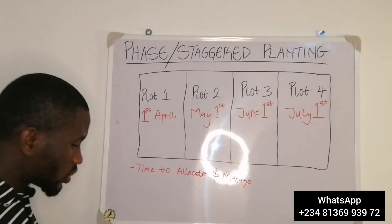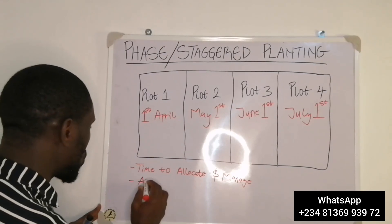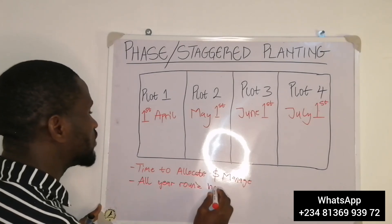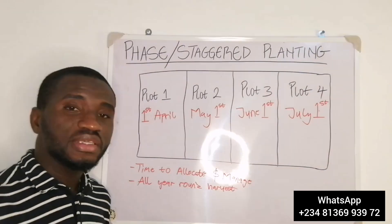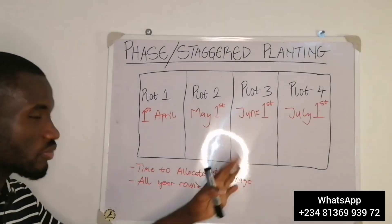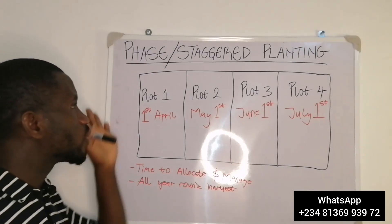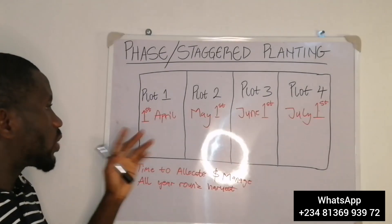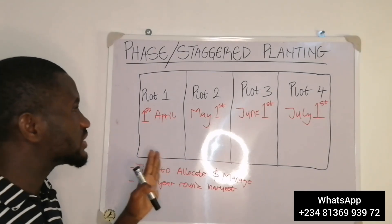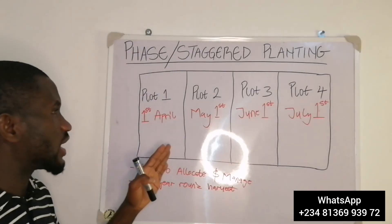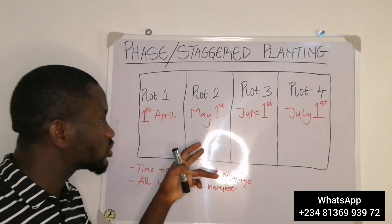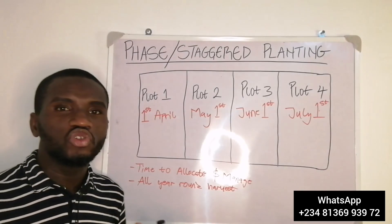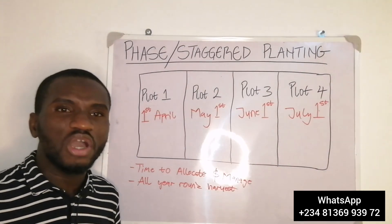The number two benefit is that it gives you all year-round harvest. Unlike when you plant everything at the same time and harvesting happens all at once, when you plant this way you are sure of your harvest happening all year-round. Every month or so, you will be harvesting from one of your plots. It gives you a kind of leverage to spread your harvesting across the year.